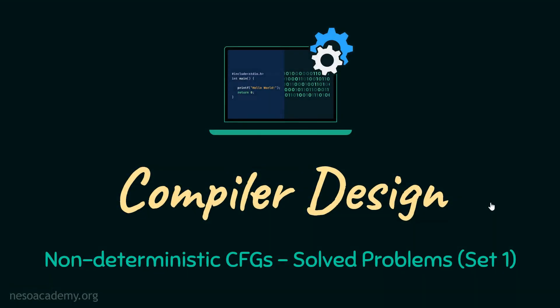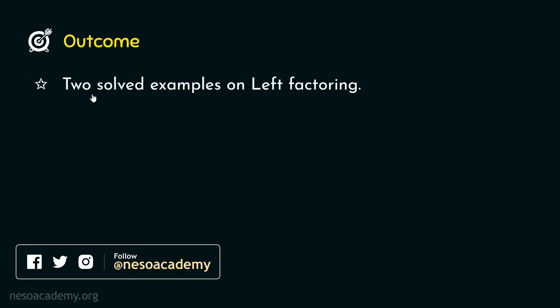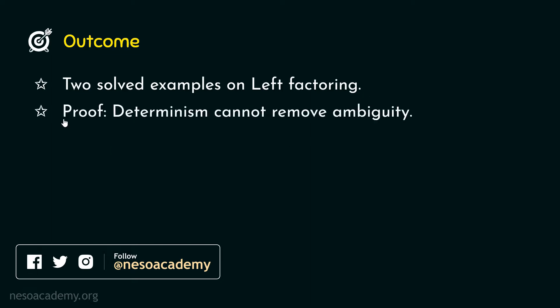Hello everyone and welcome back. As promised, in this session and in the subsequent one, we are going to observe some solved problems on non-deterministic context-free grammars. Coming to the outcome of today's session: we will first observe two solved examples on the left factoring procedure. Thereafter, with the help of the second example, we will establish the proof that determinism cannot resolve ambiguity.